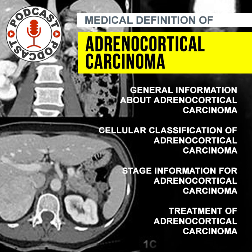In approximately 60% of patients, symptoms related to excessive hormone secretion are the main reason for seeking medical attention. Biochemical hormone testing reveals that up to 80% of tumors are functioning. The second most common symptoms at initial presentation are unspecific abdominal symptoms, such as abdominal pain or fullness. A small percentage of ACCs are incidentally discovered when imaging studies are conducted for reasons other than potential adrenal disease.